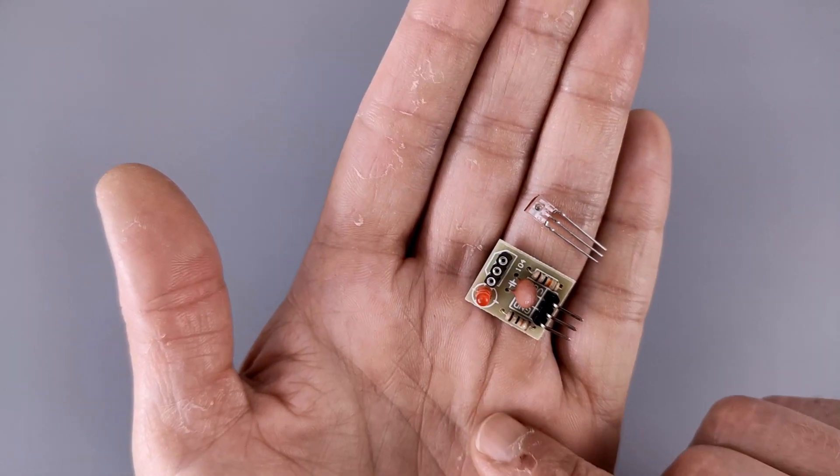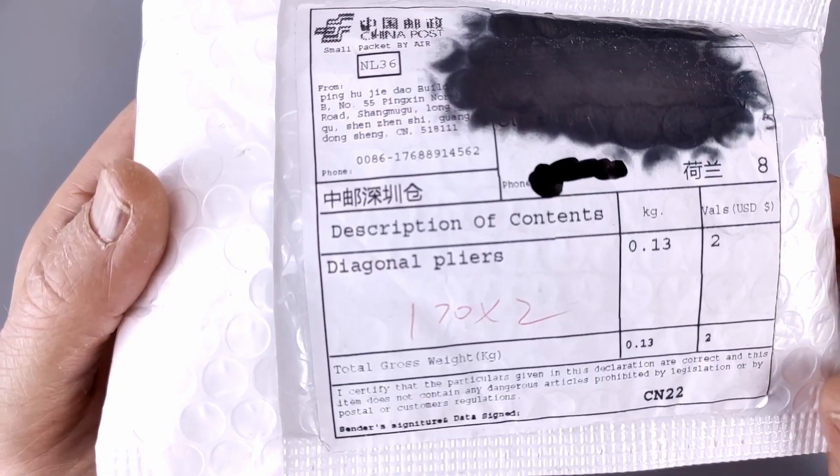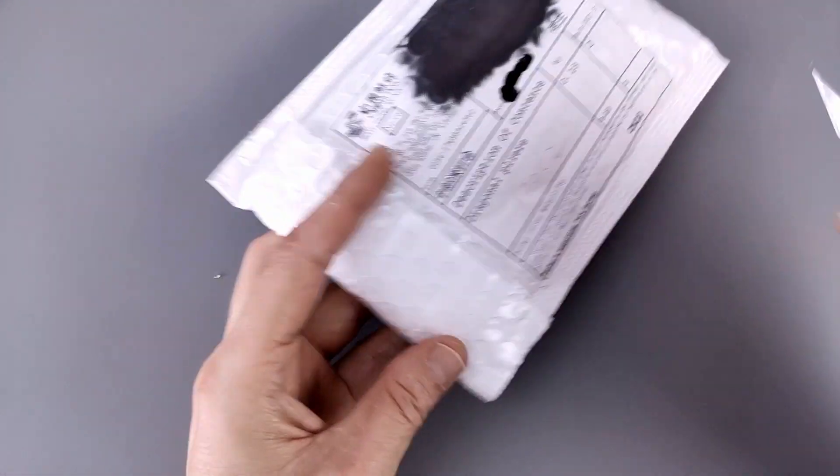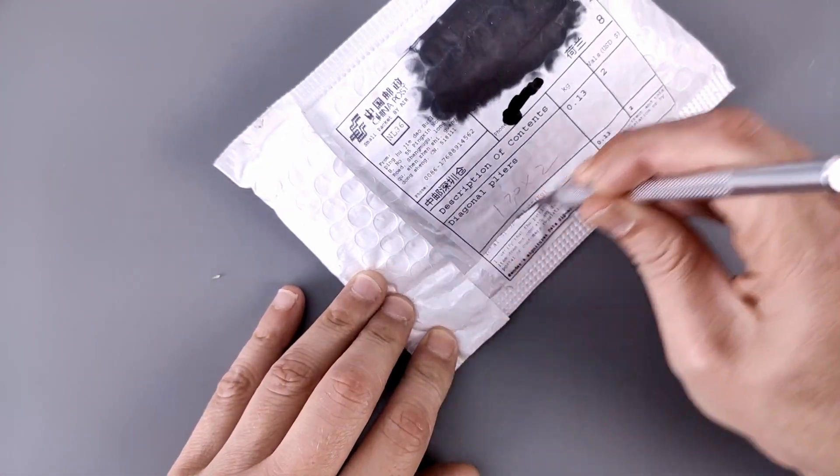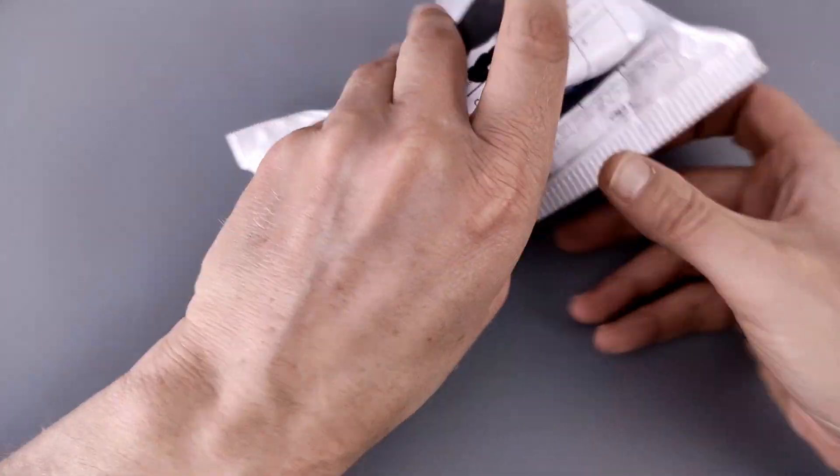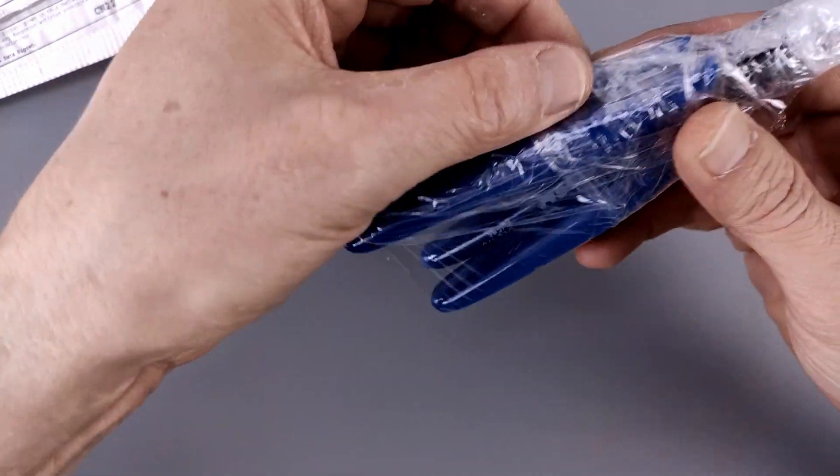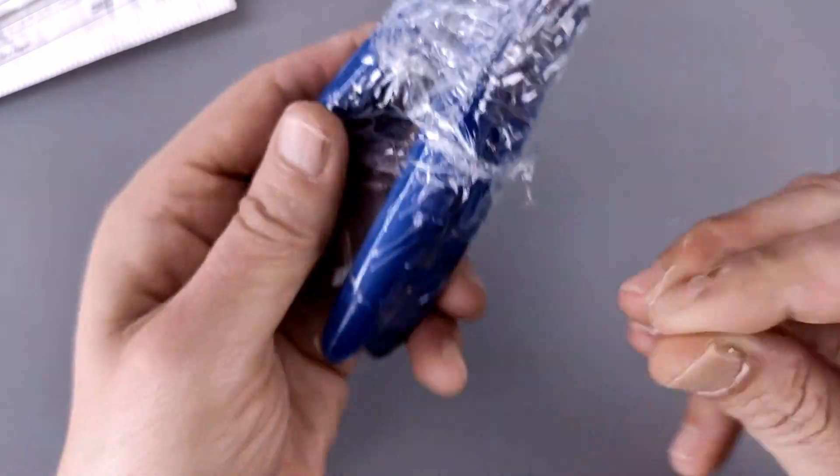Next one, diagonal pliers. I have a strong suspicion of what this is and I've been waiting for this. These are two side cutters which are pretty well wrapped.